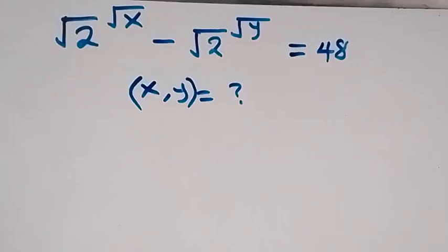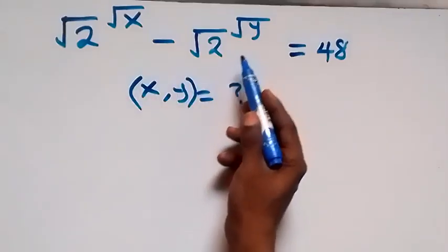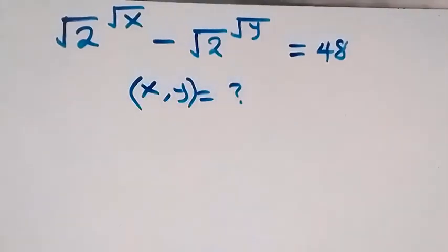Hello, you are welcome here. How to solve this nice algebra problem: root 2 raised to power root x, minus root 2 raised to power root y, equals 48.